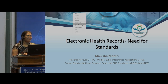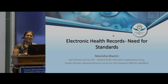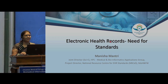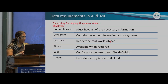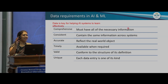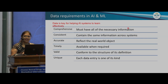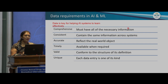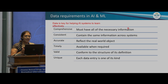Good morning, everyone. I'm taking forward from the talk by Andre and the last question about data quality and what's happening in India about data quality and the standardization part. To start with, as we discussed in the last talk, data is key for helping AI systems to learn effectively. We need data to be comprehensive, where all the necessary information is available for systems to train. We need data to be consistent, so that similar information is collected across systems and worked upon.